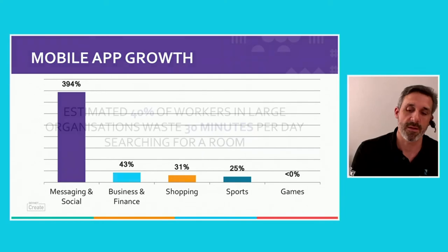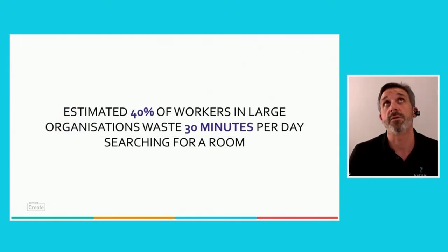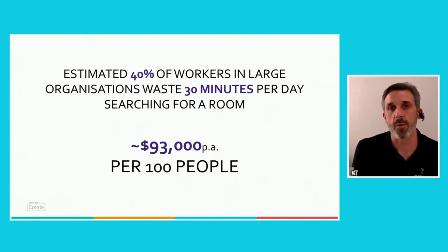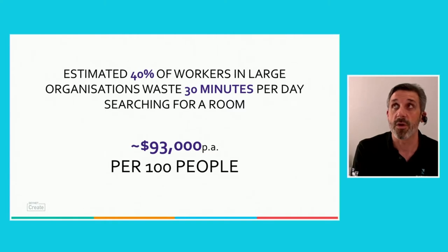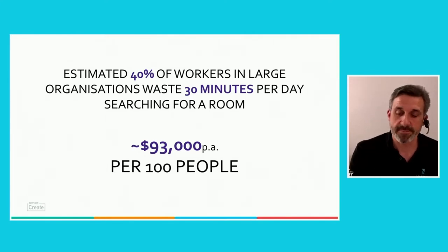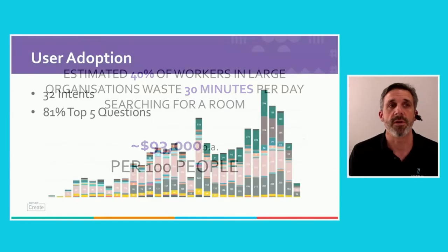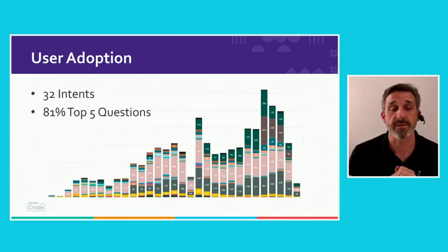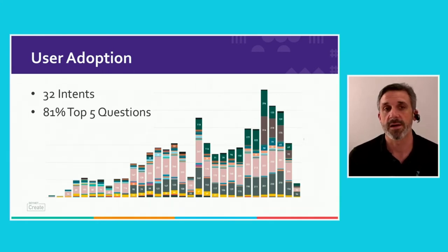Another thing we found was that people were wasting a lot of time searching for meeting rooms, and that's compounded now where people are having to book hot desks as well. So we deliver a lot of different functionality to users through chatbots. One of the things that's super important is that we monitor user adoption. We have around 32 intents in this particular chatbot, and you can see that 81% of the questions come from those top five intents. So it's really important to monitor that and make sure you're spending time in the right areas delivering the functionality that users actually want.